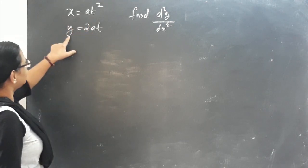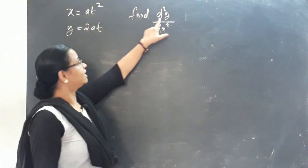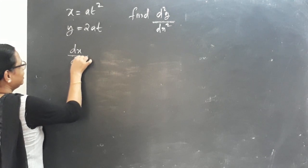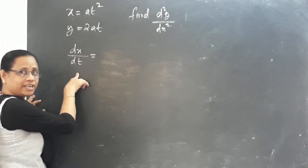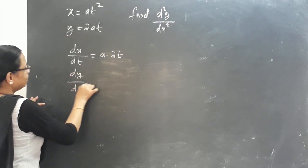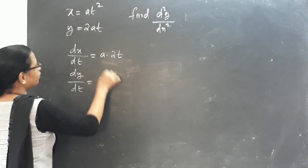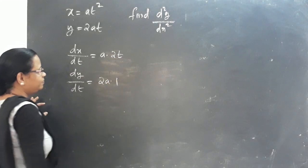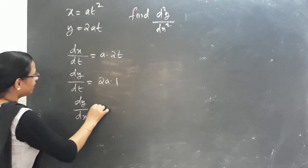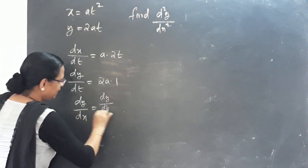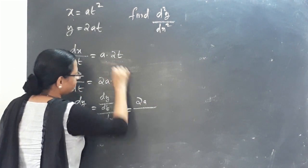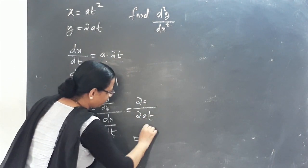Third question: x equals at², y equals 2at. Find d²y by dx². We do dx by dt with respect to t — the parameter is t — giving a·2t, that is 2at. Then dy by dt equals 2a. So dy by dx equals dy by dt divided by dx by dt, which is 2a by 2at, equal to 1 by t.